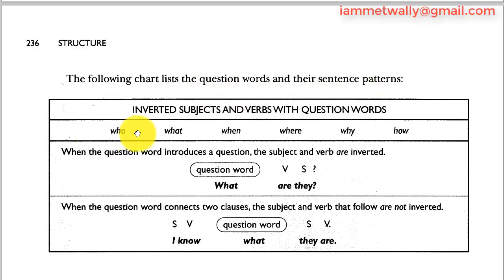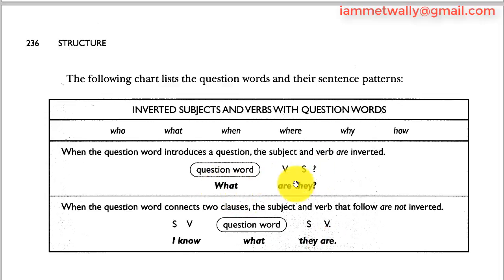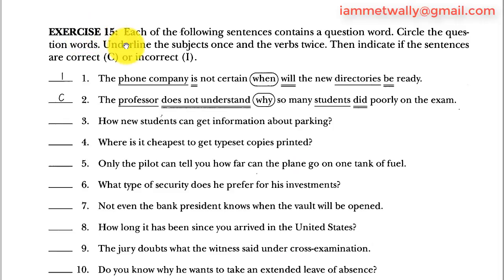The following chart lists the question words and their sentence patterns. When the question word introduces a question, the subject and the verb are inverted: 'What are they?' When the question word connects two clauses, the subject and the verb that follow are not inverted: 'I know what they are.' So with a question mark, invert — verb then subject; as a connector, keep subject then verb.